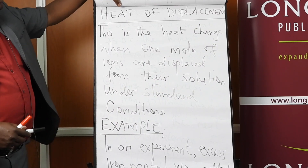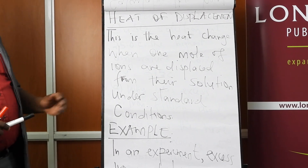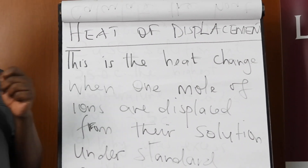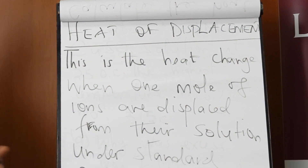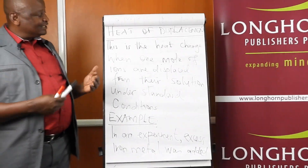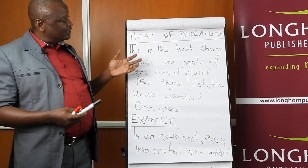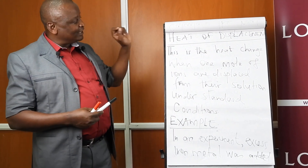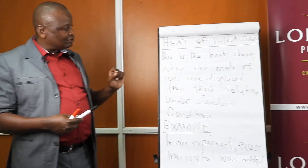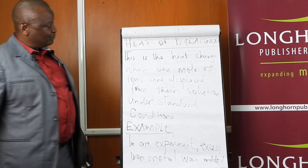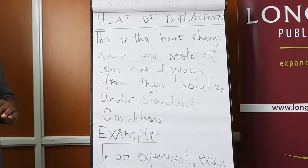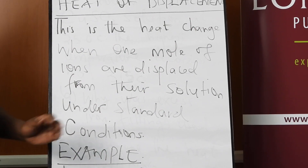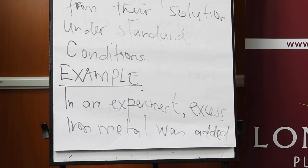The next enthalpy change is heat of displacement. Displacement is where you displace ions from a solution, in most cases using a metal. Looking at displacement reactions involving metals and metal solutions, heat of displacement is the heat change when one mole of ions are displaced from their solution under standard conditions. Remember to specify one mole and that the reaction takes place under STP.